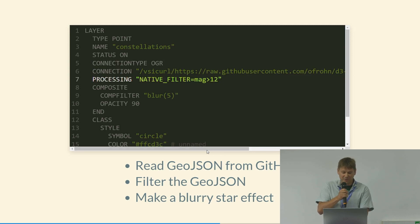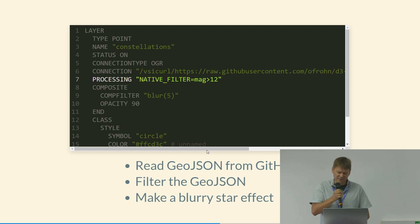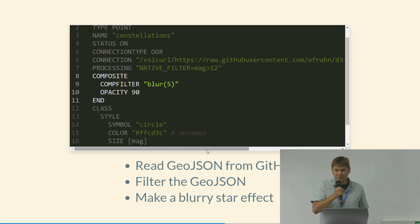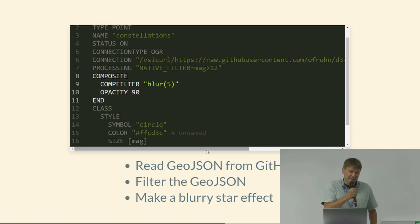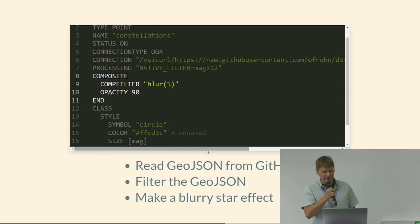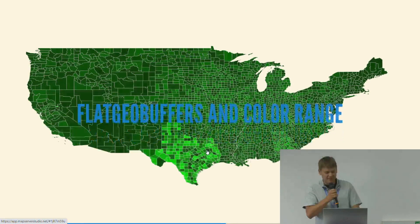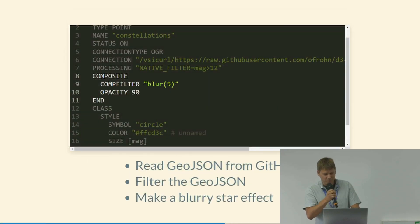You can render that using MapServer and apply filters as well — you can filter the data before or within MapServer. Once the data is available you can style it however you want. In this case there's a composite block where you can apply different rendering effects — here it's blurring to give the stars a blurry effect. You can also have local data mixed in with data from other sources.